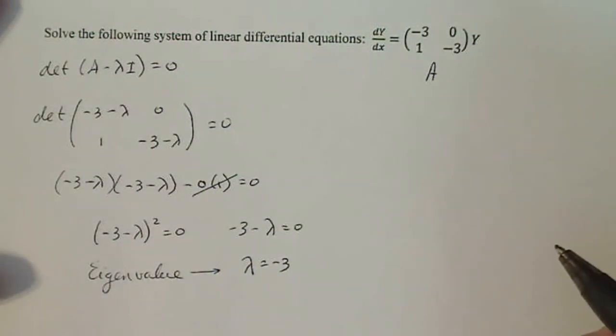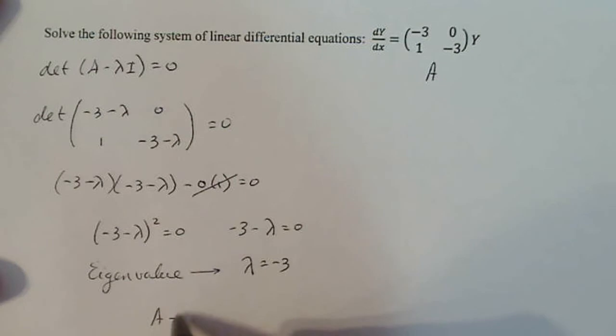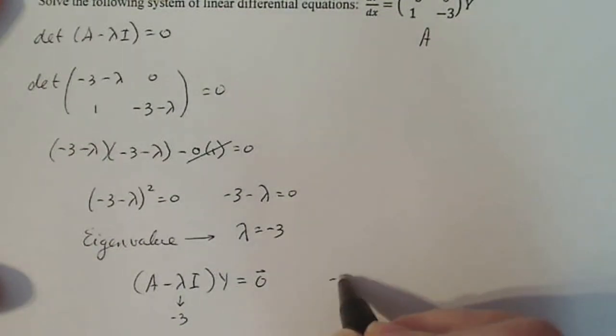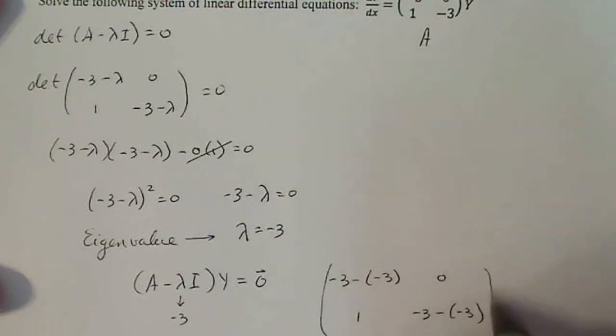So let's go ahead and find the eigenvector that corresponds with it. What I need to do is solve the equation A minus lambda I times y equals the zero vector. So A minus lambda I, as I had found before, I know that lambda equals minus three here. So I'm going to plug minus three into my matrix here. So I end up with minus three minus negative three, zero, one, minus three minus negative three.